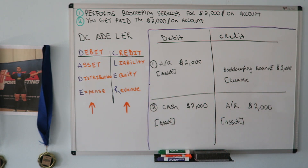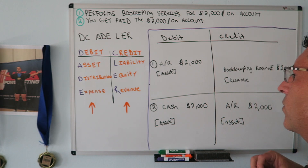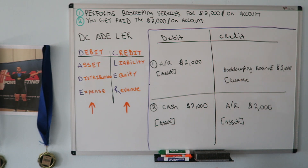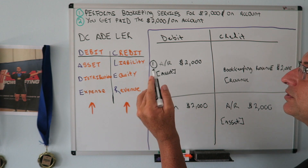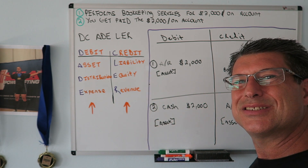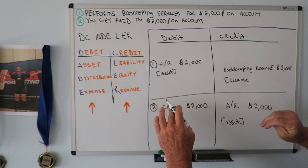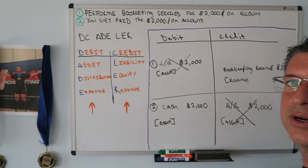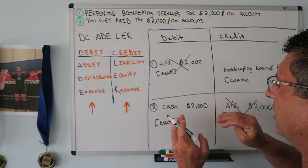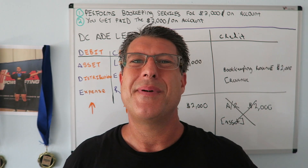People ask: why isn't the second journal entry revenue? Great question. When you do both transactions together, you can see it's just an extra step, because the accounts receivable entries cancel each other out. What you really have, combined, is a cash debit and a bookkeeping revenue credit. Doing them together helps you see that clearly.